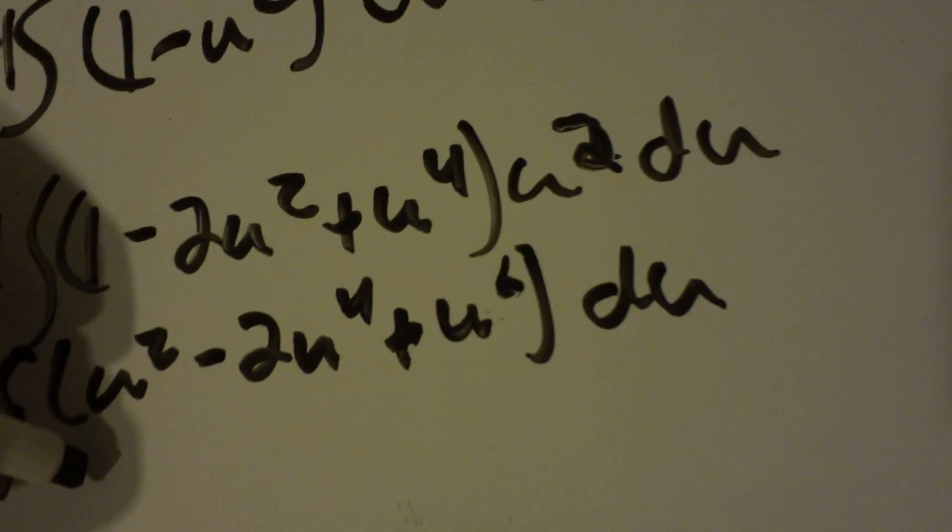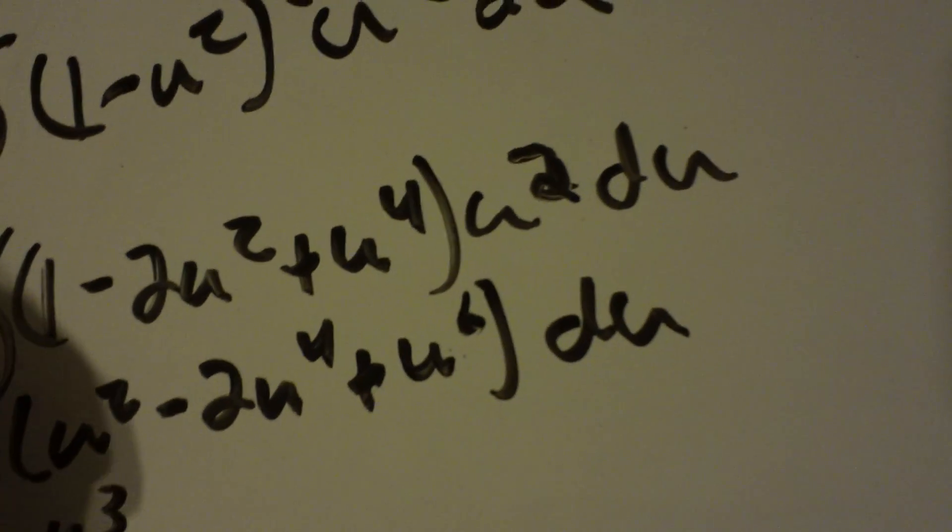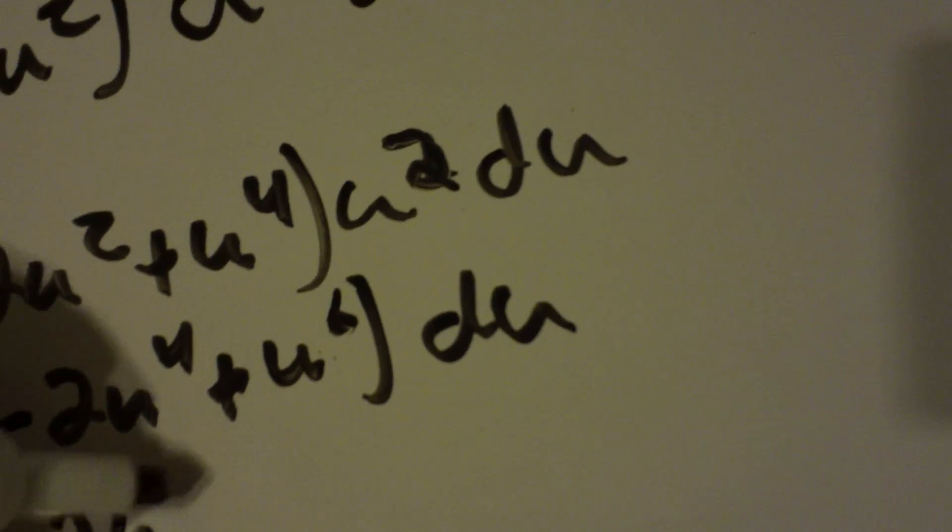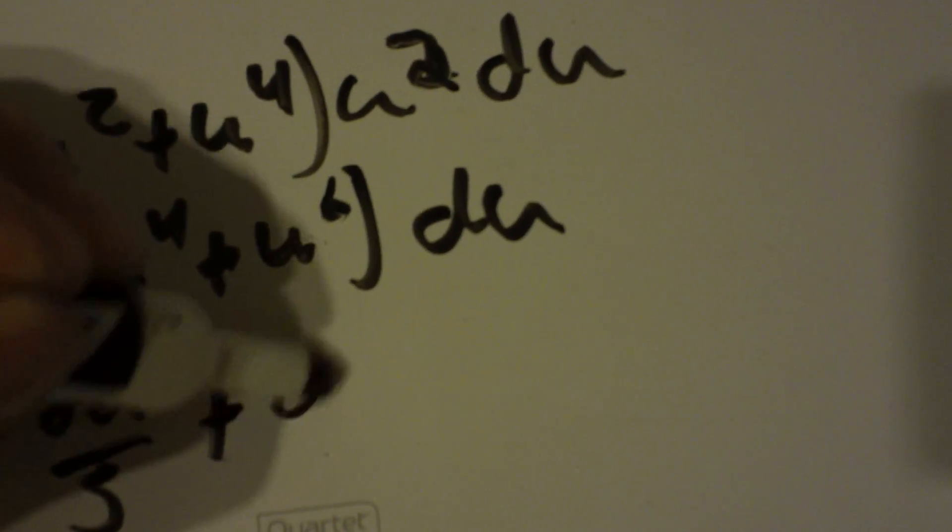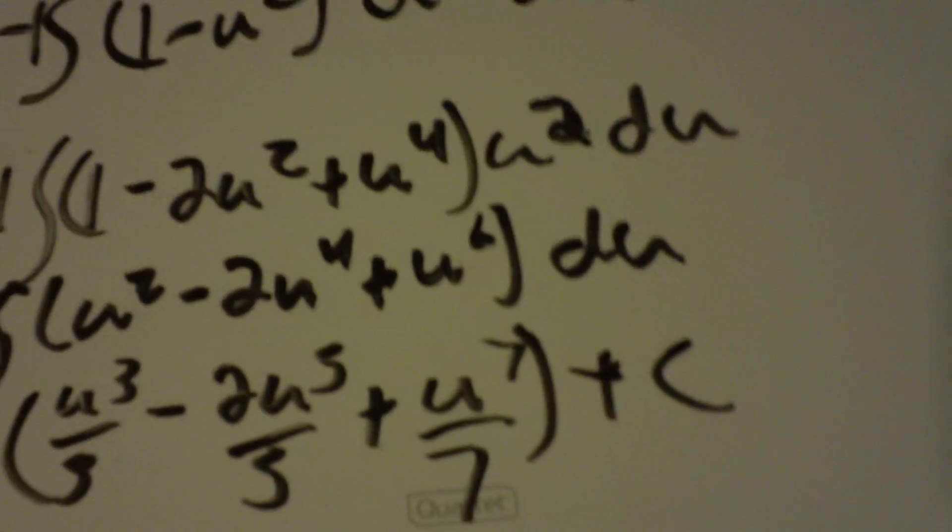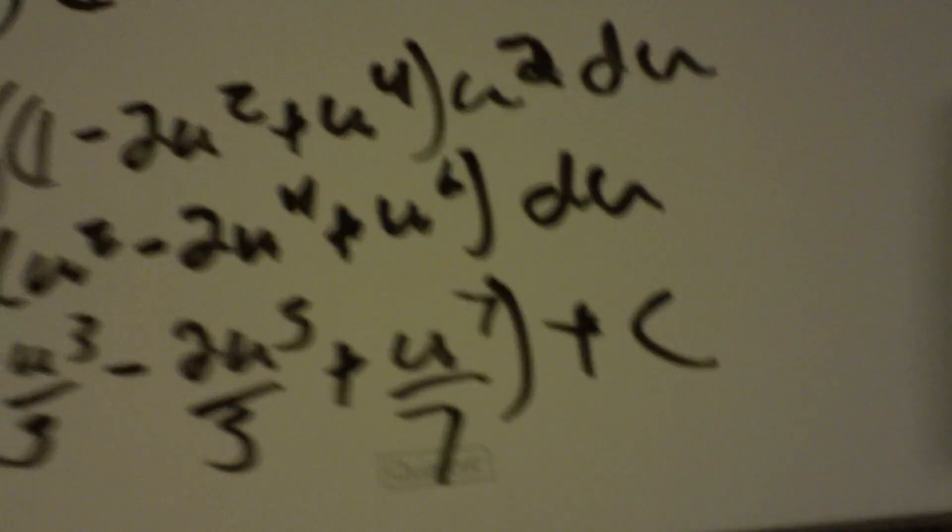Now you integrate it, which is the easy part. u squared is simply u cubed over 3. 2u to the 4th is simply 2u to the 5th over 5. And u to the 6th is u to the 7th over 7. And then you're plus c out here because it's an indefinite integral. You still have your negative sign out here.